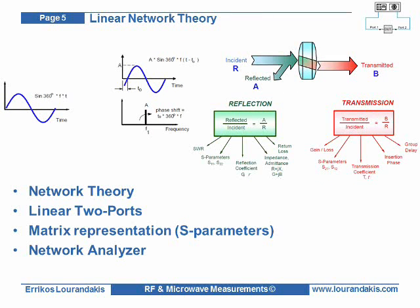Let's have a closer look at linear network theory by considering two-port networks. A sine wave of certain frequency f0 passed through such a network will be present at its output with the same frequency, having a phase shift with respect to the input and an altered amplitude. The incident wave at the input port is partially reflected and transmitted to the output port. Linear networks are described in terms of reflection and transmission parameters, where reflection parameters are calculated from the ratio of reflected to incident power. These network parameters can be measured with a network analyzer in the form of S-parameters.